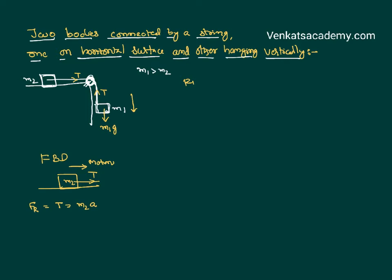If I draw the free body diagram for M1, this is M1, this is its load, and this is the tension in the string. This system is going to move in the downward direction.